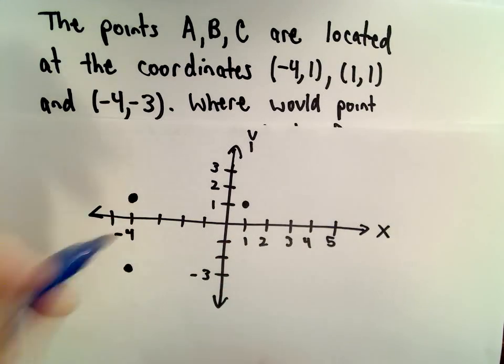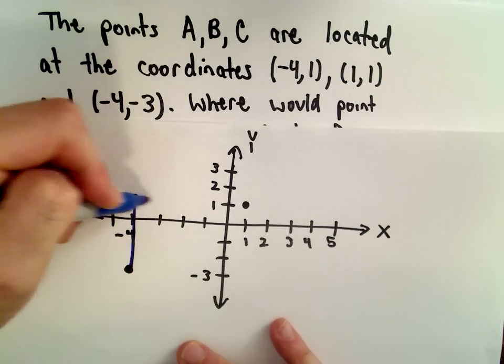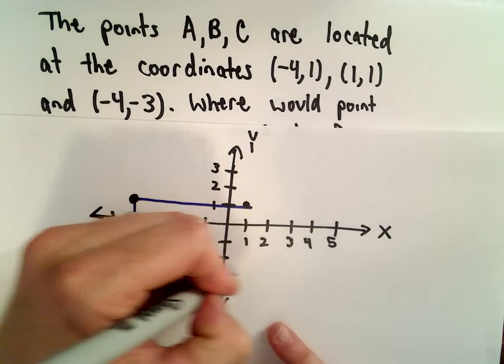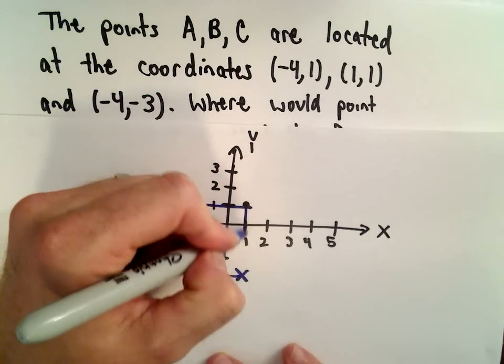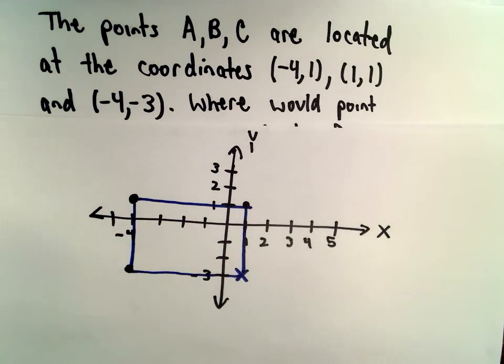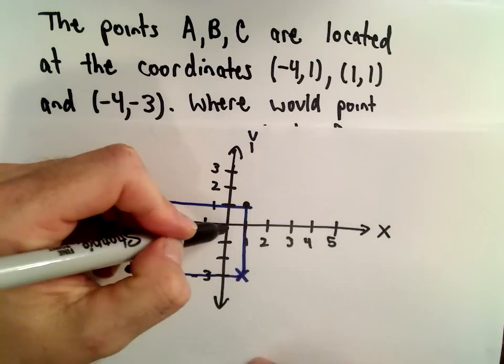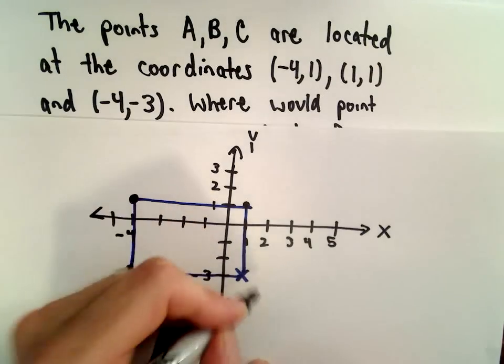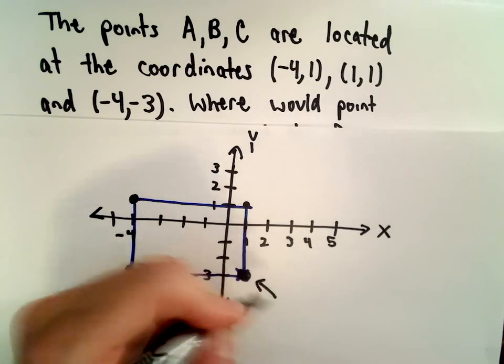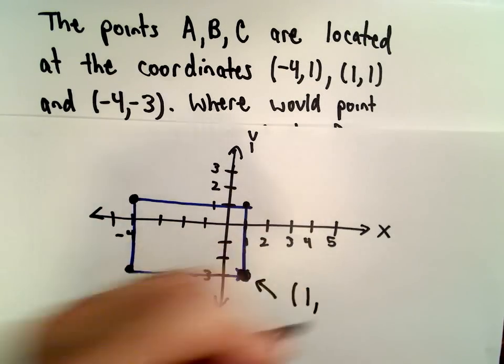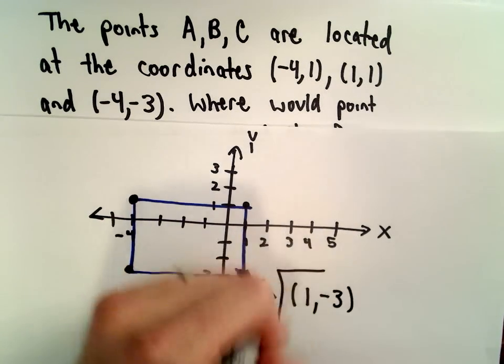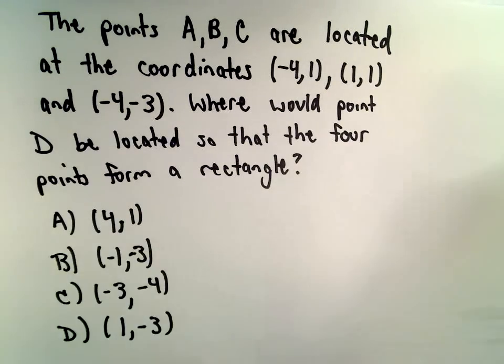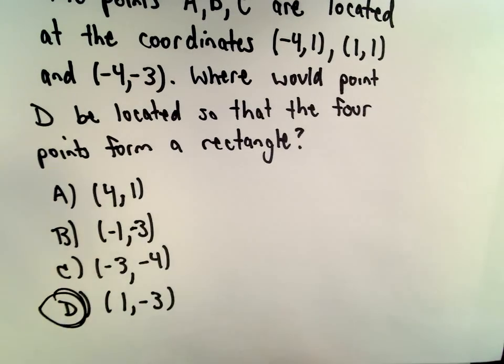To form a rectangle, it looks like the missing point would be right there. The coordinates of that point—from the origin, we've gone 1 unit to the right and down 1, 2, 3 units. So this is the point (1, -3), and that's our solution. (1, -3) was answer choice D.